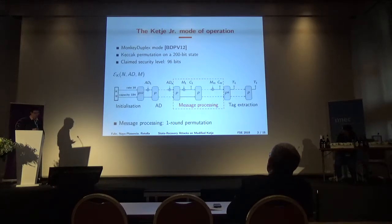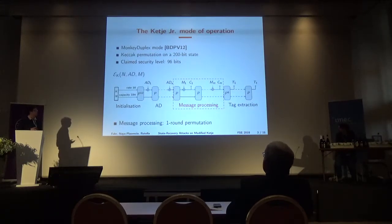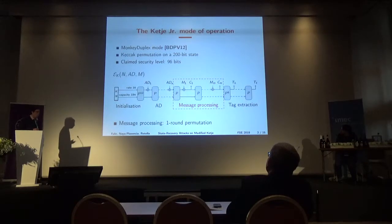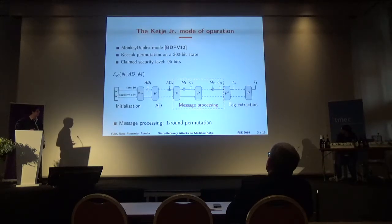After an initialization step, the associated data are processed. Then the main topic of my talk is the message processing step, which consists of applying one round of the KETJER permutation, then adding the 16-bit message block to the state, outputting the ciphertext block, and iteratively doing that for all message blocks. Then there is the tag extraction step, which will not be relevant for my talk.